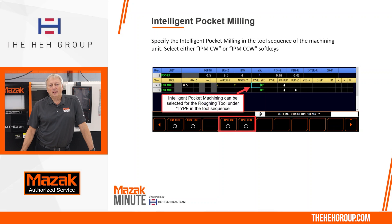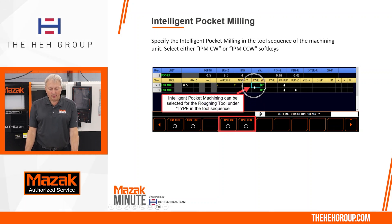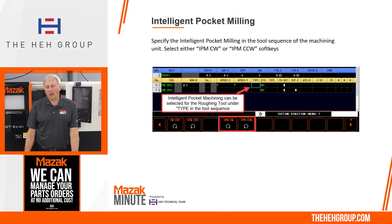To specify intelligent pocket machining (IPM), go to your pocketing unit, go to your rough tool, and cursor over to where it says type. Under the type soft keys you will see IPM clockwise and IPM counterclockwise. I like to choose counterclockwise so that I'm climb milling as I cut inside a pocket.